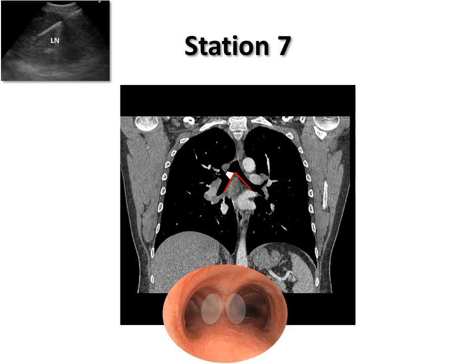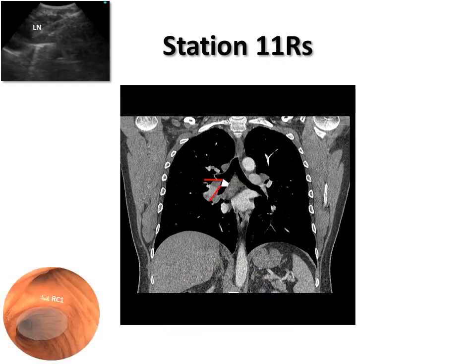Station 7 extends from below the main carina to the upper border of the lower lobe bronchus on the left and to the lower border of the bronchus intermedius on the right. Station 11R is located between the right upper lobe bronchus and the bronchus intermedius.